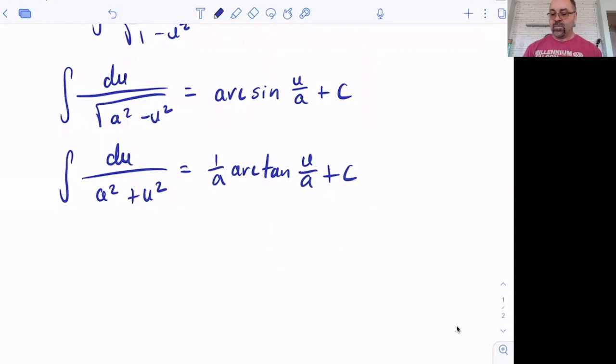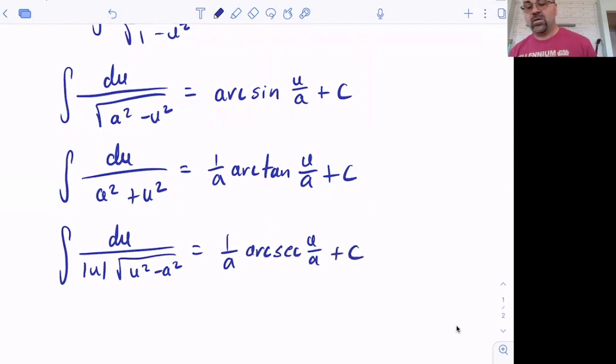And my third formula, this is arc secant. So these are the three main formulas that we're going to be using today for anti-deriving using inverse trig functions.